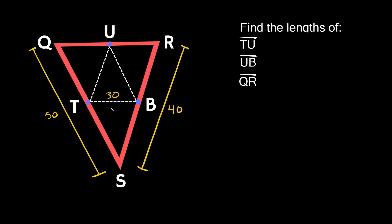The other relationship is that the mid-segments are half the length of the line that they're parallel to. So for instance, this line TB is 30, so then this line QR must be twice the length of this mid-segment. If mid-segment TB is 30, then the length of QR would be equal to 60.